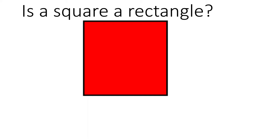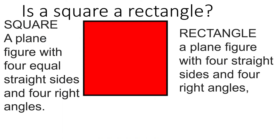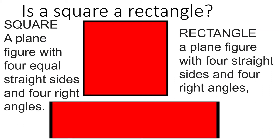To help answer that question, I'm posing another one from the mathematics point of view: is a square a rectangle? To answer this we need some definitions. A square is a plain figure with four equal straight lines and four right angles. A rectangle is a plain figure with four straight sides and four right angles. Both of them have right angles and four straight sides.